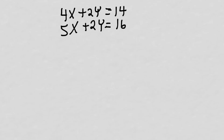If any of this confused you, stop the video, rewind it, and watch it again. Here's our second problem with elimination. It looks fairly similar to the one we just did, except there's one problem: in the x's, there's nothing that eliminates — there's no minus 4x to pair with the 4x. In the y's, there's nothing to eliminate either — you've got plus 2y and plus 2y, so adding them gives you 4y, not zero.